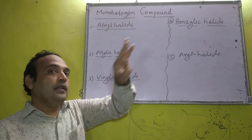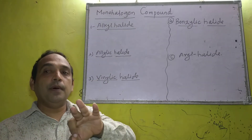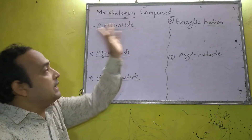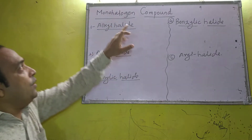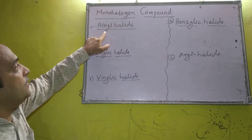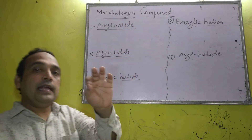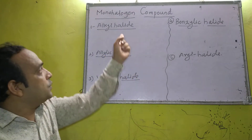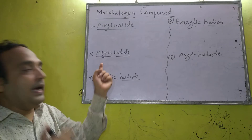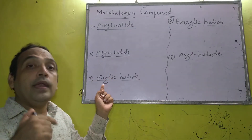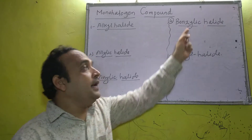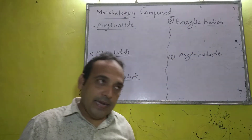Monohalogen compounds — those halogen derivatives of hydrocarbon which contain one halogen atom — are classified into: alkyl halides (haloalkanes), allylic halides, vinylic halides, benzylic halides, and aryl halides.